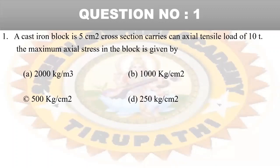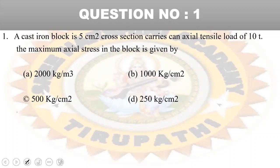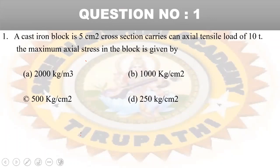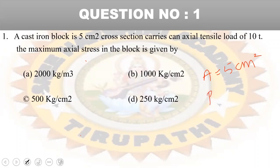First question: a cast iron block of 5 cm square cross section carries an axial tensile load of 10 tons. We need to find the maximum axial stress. Area A is equal to 5 cm square, and tensile load P is equal to 10 tons.